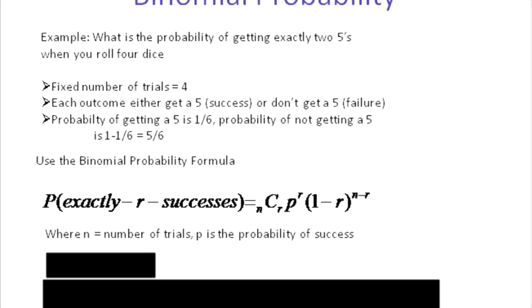Same example: what's the probability of getting exactly two fives when you roll four dice? The number of trials is four — four dice. Each outcome you either get a five or you don't, so that's success and failure. We're interested in two fives, so two successes. The probability of getting a five is one over six; the probability of not is five over six. We're going to use the formula, which has a combination in it. You need N — the number of trials — and R — the number of successes, which is two — and then the probability of a success.